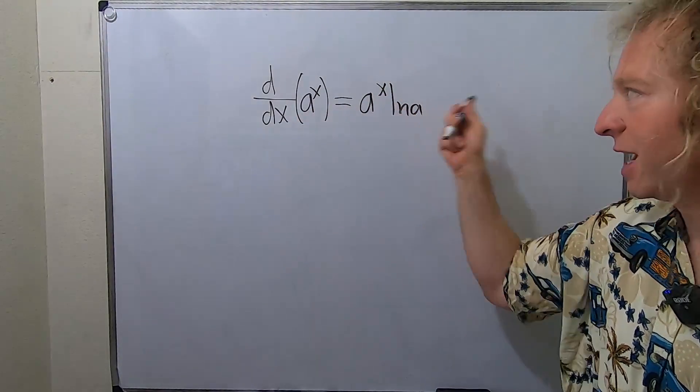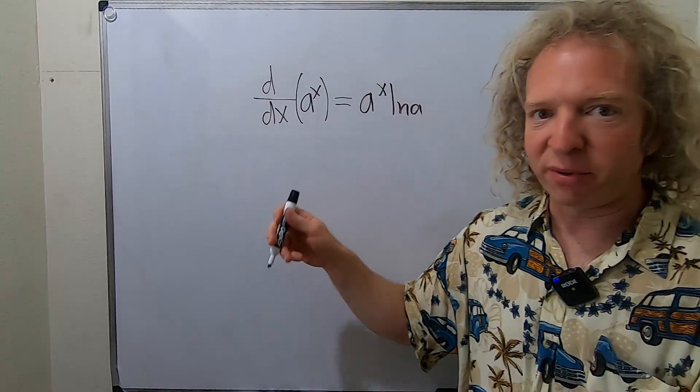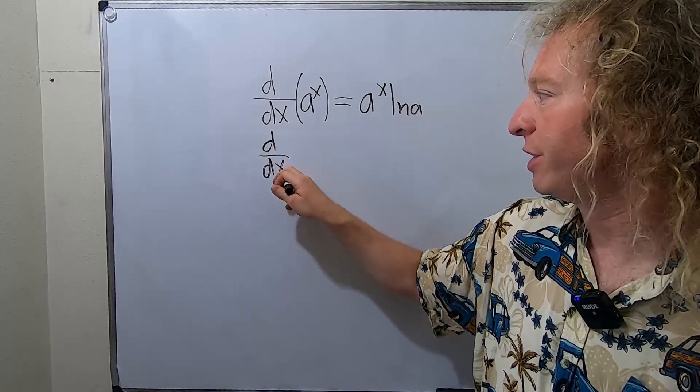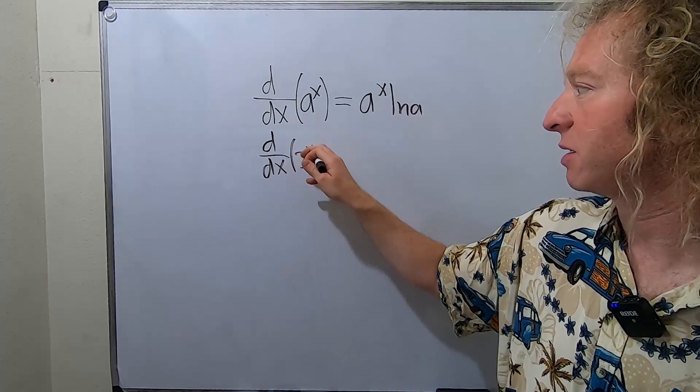Okay, so it's a to the x natural log of a. Let's do a simple example right away so you see how it works. Say we had to take the derivative of three to the x with respect to x.